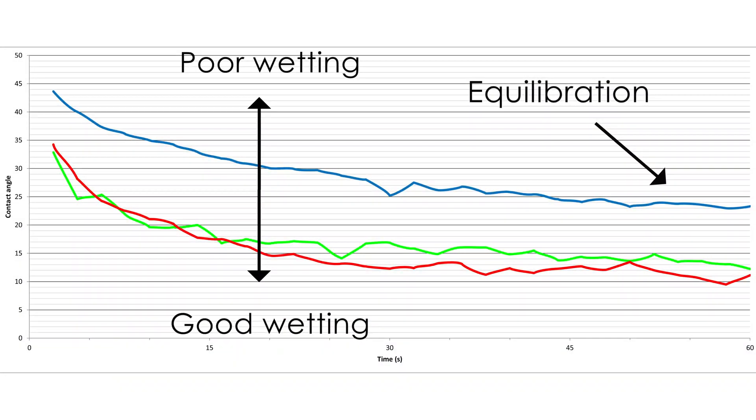A steep angle indicates a drop that hasn't wet well. Conversely, a shallow angle indicates a drop that's wet very well.